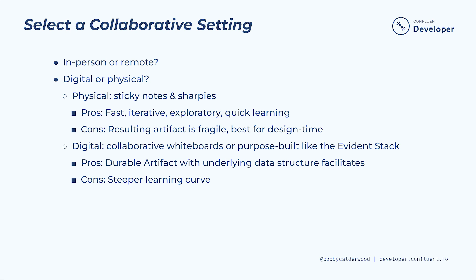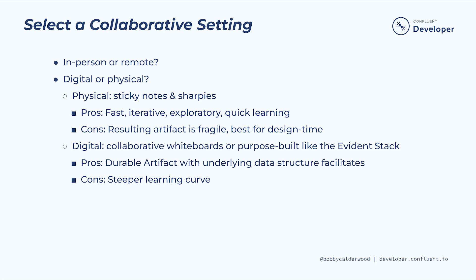Now that we've taken care of the who, we need to prepare the where and how. When selecting a collaborative setting, keep in mind that the goals of the workshop are to understand the business problem and specify the solution, while keeping in mind the broader organizational context. The first decision is whether to meet in person or remotely, which will depend on the team's co-location or tolerance for travel. In person is usually best for context sharing and group learning. However, event modeling inventor Adam Dimitrick designed the workshop to work remotely as well. When remote, a digital collaboration space is the obvious choice, but when in person, the facilitator must choose between a physical or digital collaboration space.